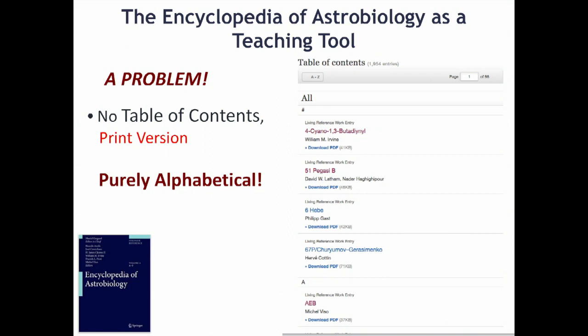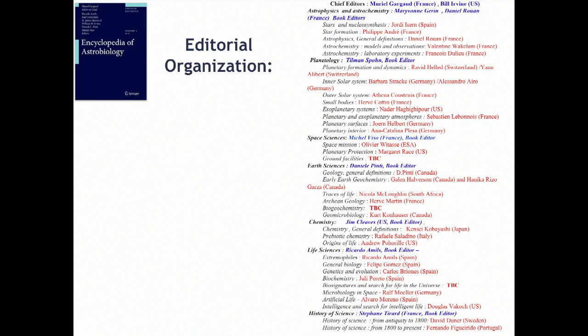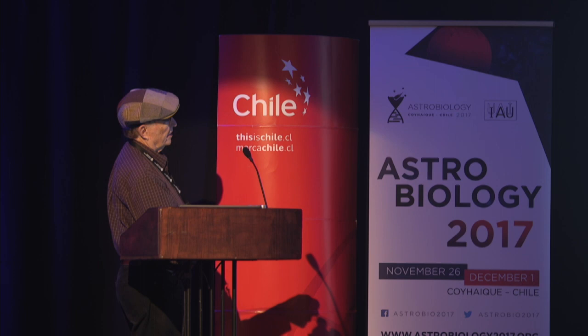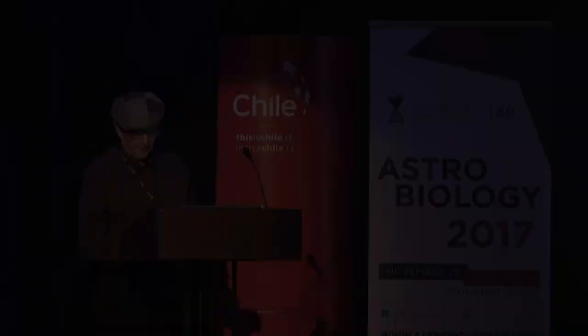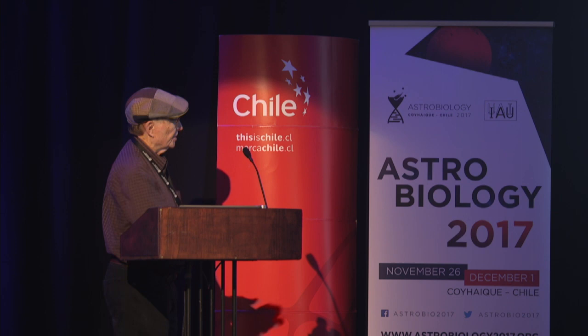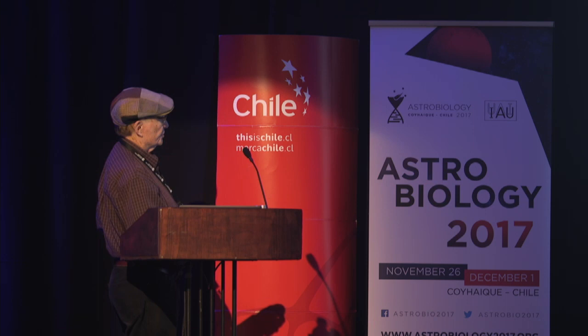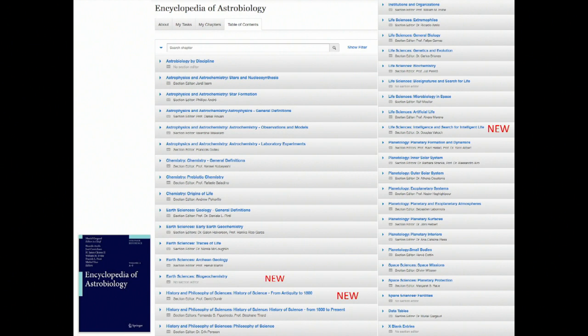As editors, we can look at it and see that it has been divided into fields — for example, astrophysics and astrochemistry, which has subfields like stars and nucleosynthesis, star formation, and so on. The planetology section has sections on formation and inner solar system, outer solar system, and so on. The most recent version has added new sections including biogeochemistry and history and philosophy of science from antiquity to 1800. You might wonder what there is about astrobiology in the classical world — go read Lucretius and he will tell you about how there must be other worlds in the universe and they must be populated.